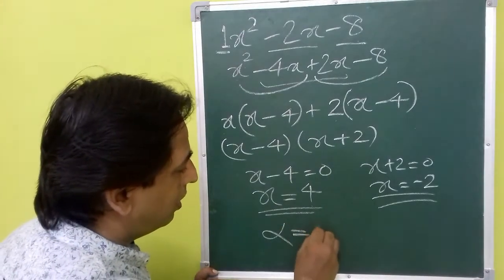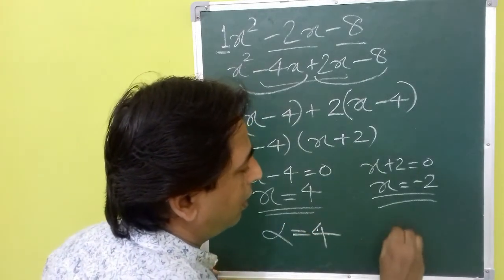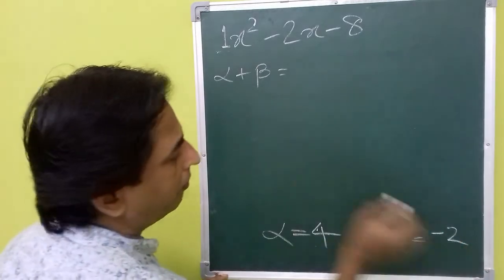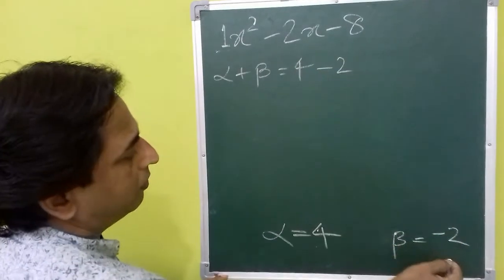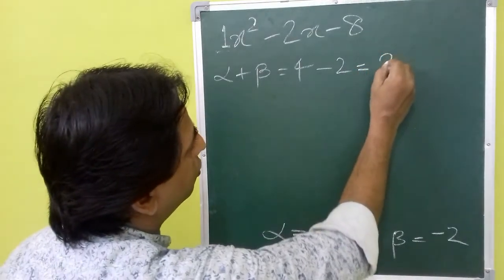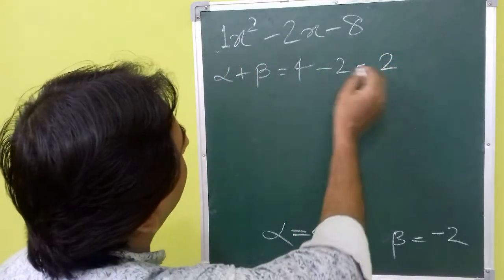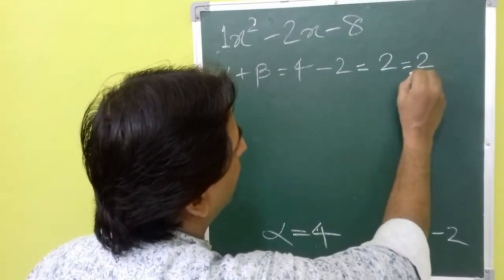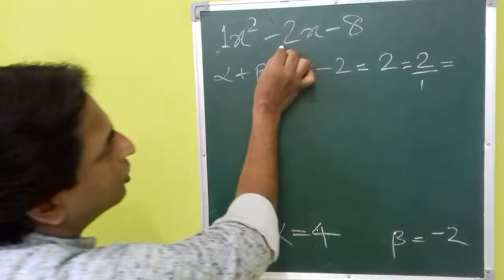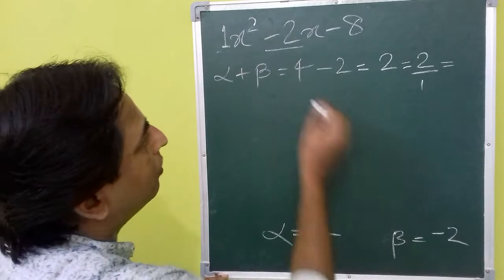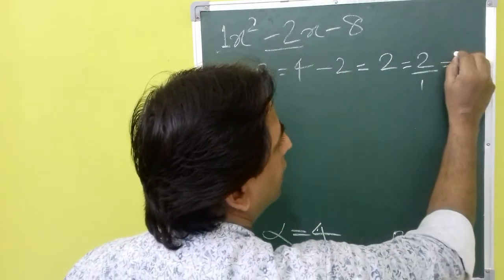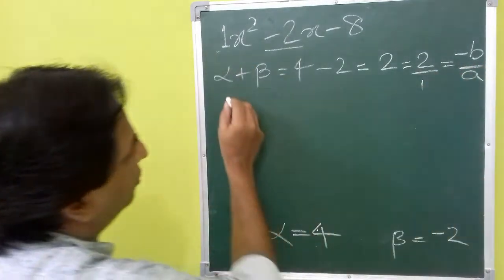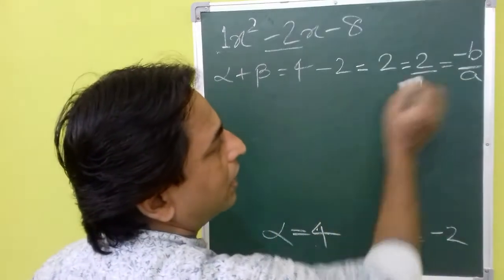Let us call the zeros alpha and beta. Alpha plus beta equals 4 plus negative 2, which is 4 minus 2, equal to 2. Is this equal to minus b by a? Yes, because b is minus 2, so minus b is plus 2, and a is 1. So minus b by a equals 2 by 1, which is 2. We have verified alpha plus beta equals minus b by a.